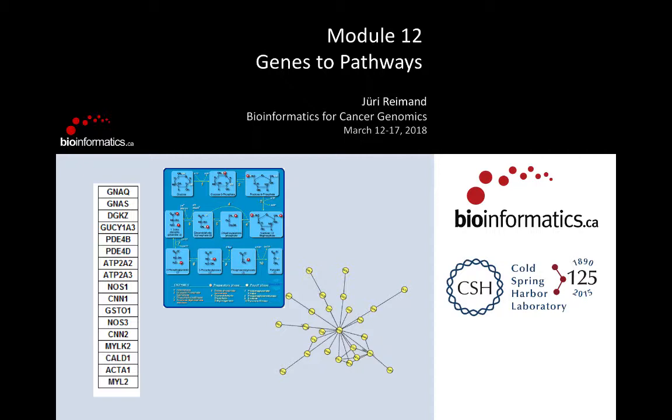The learning objectives of this module: you should be able to identify situations where pathway and network analysis is useful — and if you're working on genomic or any other high-throughput data, there will be plenty of situations. You'll learn about the main components of pathway enrichment analysis: gene lists and pathways, which in our context are mostly sets of genes. Many biologists find this counterintuitive, but it's the easiest way to analyze them.